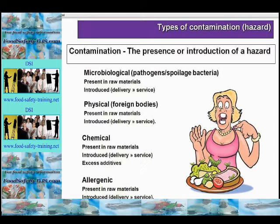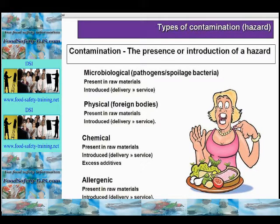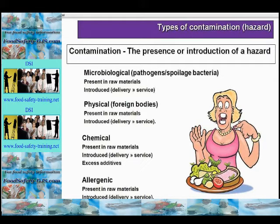Thirdly, chemical hazards. These could cause acute diseases, which occur quickly, chronic diseases, which take a longer time to develop, or they could be carcinogens. These include industrial chemicals such as PCBs — polychlorinated biphenyls — pesticides from growing crops and pest control, and veterinary residues.